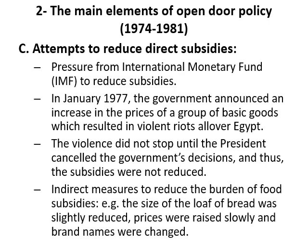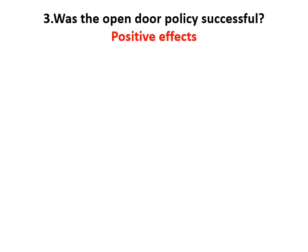Instead, indirect measures were taken to reduce the burden of food subsidies — such as slightly reducing the size of the bread loaf, slowly raising prices, and changing brand names.